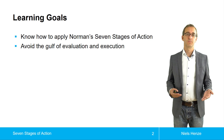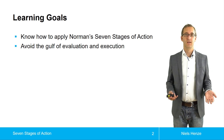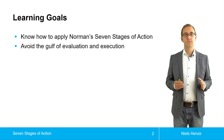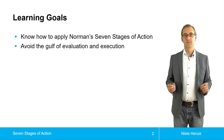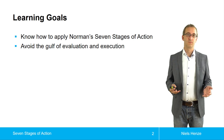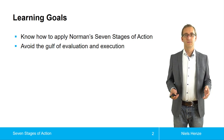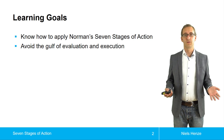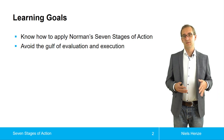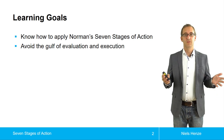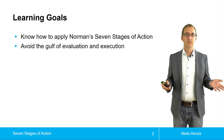Models that are able to predict users' behavior can typically only be applied to very specific types of user interfaces. An exception is Don Norman's seven stages of action model, because it can be applied to almost any kind of interface or problem.